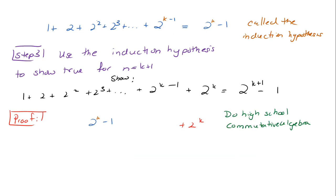Now you do high school commutative algebra. There's two of these guys, so I combine them as 2 times 2^(k-1). This is my laws of exponents. Notice I've ended up where I'm supposed to end up. That completes my proof.